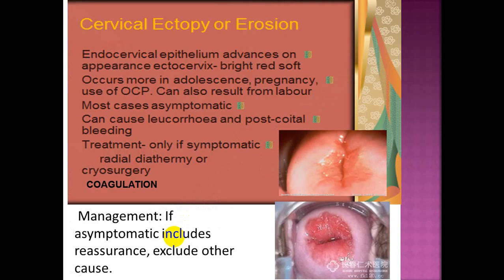Cervical ectopy, also called erosion, is where the endocervical epithelium advances on the ectocervix in appearance — bright red and soft. It occurs more in adolescence, pregnancy, and with use of oral contraceptive pills, and can also result from labor. Most cases are asymptomatic but can cause leukorrhea and post-coital bleeding. Treatment is only indicated if symptomatic, using radial diathermy, cryosurgery, or coagulation. Management of asymptomatic cases includes reassurance and excluding other causes.